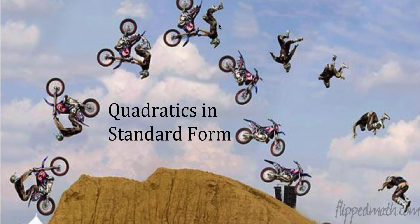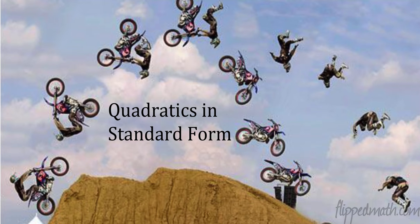Welcome back. Today we're going to talk more about quadratics — this is Mr. Sullivan. We're going to talk about them in standard form. Look right here, we have this motorbike guy going up here. We have a parabola — in fact, we have two parabolas. We have the bike's parabola and then also his parabola where he falls off. This is a naturally occurring phenomenon. It's not like this guy said 'I want to fall in this U shape' — that's how the physics of this all works.